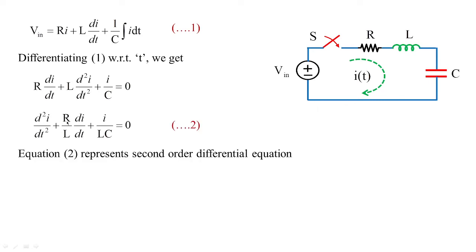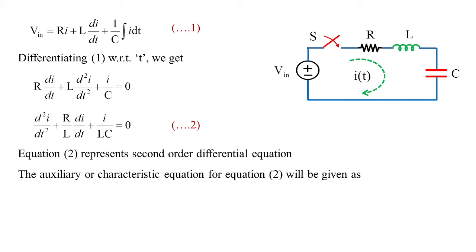This is a second-order differential equation, called equation 2. In order to find the solution for this second-order differential equation we refer to engineering mathematics — available in B.Tech first-year syllabus — specifically partial differentiation. We take the help of the auxiliary or characteristic equation, which is obtained as S² + (R/L)S + 1/(LC) = 0.